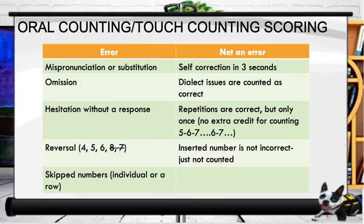When it comes to oral counting and touch counting scoring, we look for these errors: a mispronunciation or substitution, an omission where they skip a number entirely, a hesitation without a response (that's the three-second rule), a reversal — for instance if the student said five, six, eight, seven — and skipping numbers, either individual numbers or an entire row.